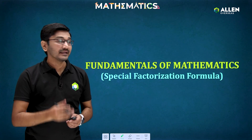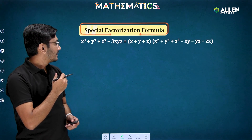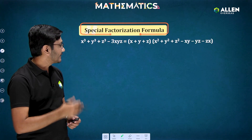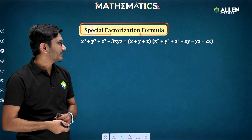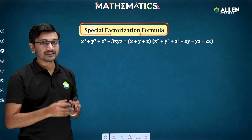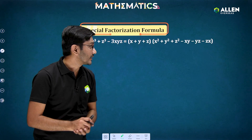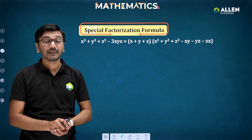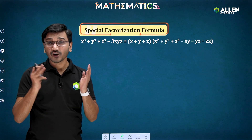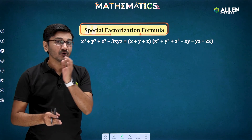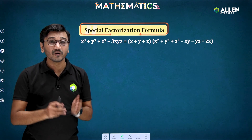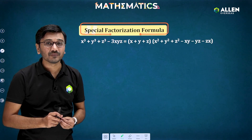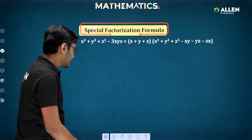The formula here is: x³ + y³ + z³ − 3xyz equals (x + y + z)(x² + y² + z² − xy − yz − zx). If you are not knowing this formula, just take note of it and always remember it, because there are many questions framed on this formula in JEE exams.